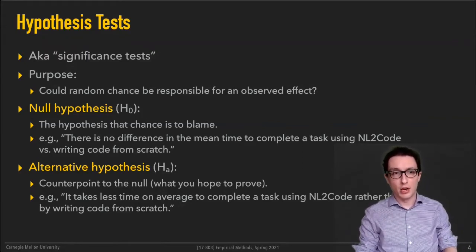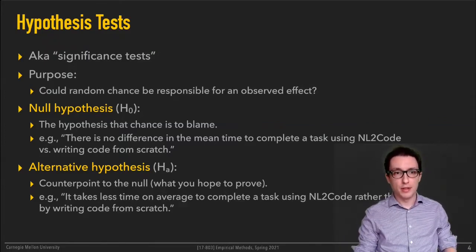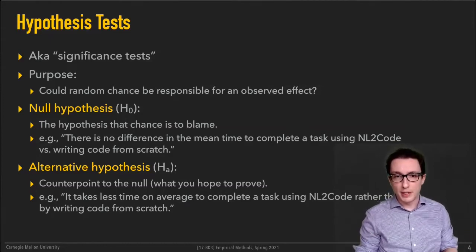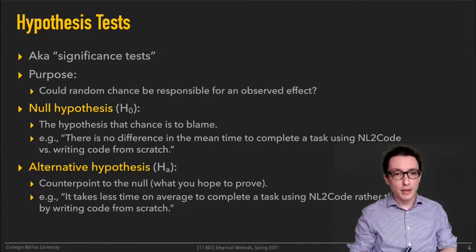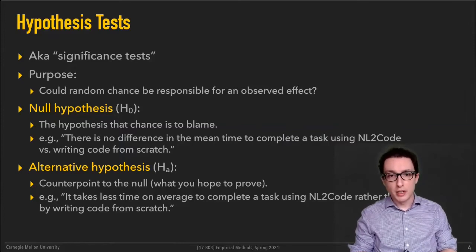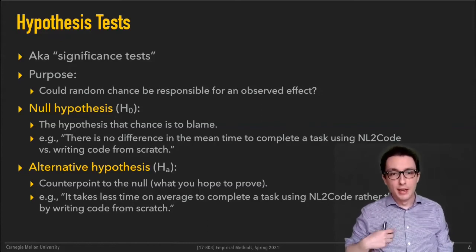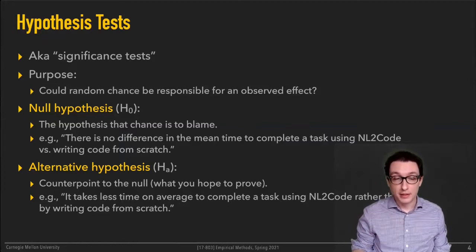We're going to be talking about hypothesis testing a lot — that comes up in all kinds of scenarios, including in this regression discussion for today. The idea is with all of these hypothesis tests — of which there are many — there's a ton of these and we're not going to cover all of them in any depth. There are entire books written about every one of them. But typically the point of all of these is to answer whether random chance could be responsible for some observed effect that you've measured.